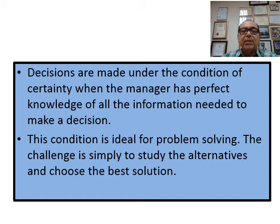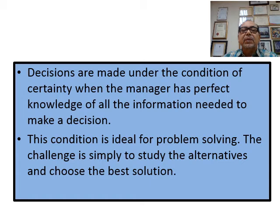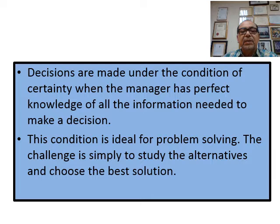However, if you only have nine ingredients out of ten, that's where decision making becomes challenging. You still have to decide, you still need to cook and eat, but there's a possibility the food won't be as good as planned. This condition is ideal for problem solving — the challenge is simply to study the alternatives and choose the best solution.